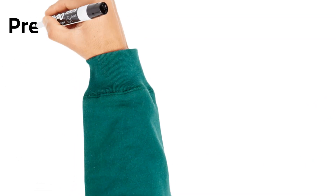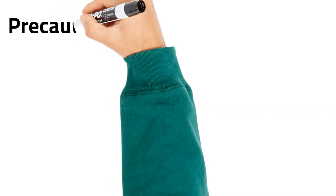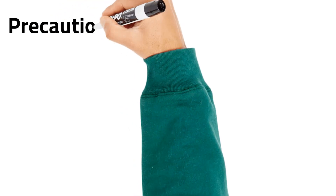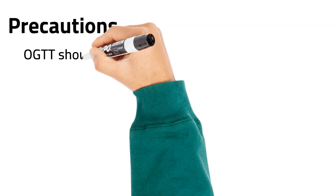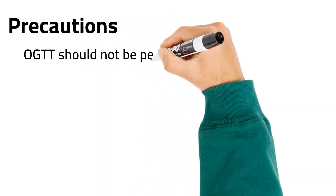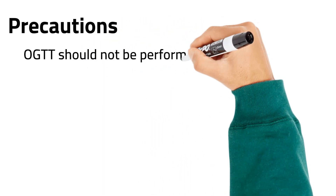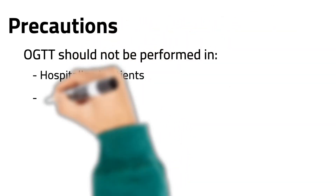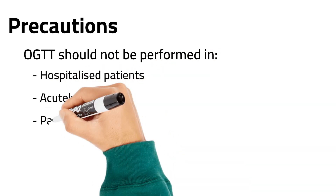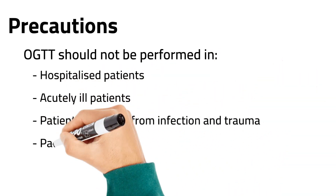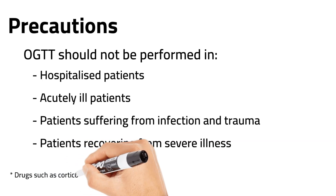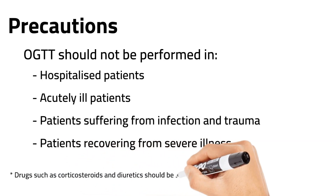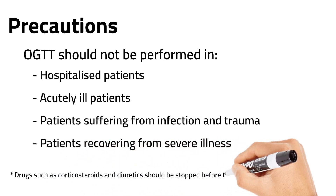Glucose tolerance tests should not be performed on hospitalized, acutely ill, or inactive patients, patients suffering from an intercurrent infection or the effects of trauma, and those recovering from a severe illness. Drugs such as corticosteroids and diuretics should be stopped prior to the test if possible, as they may impair glucose tolerance and therefore affect the results.